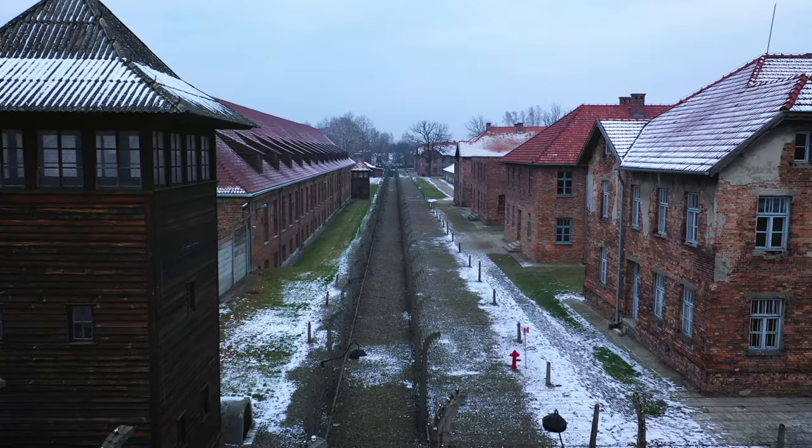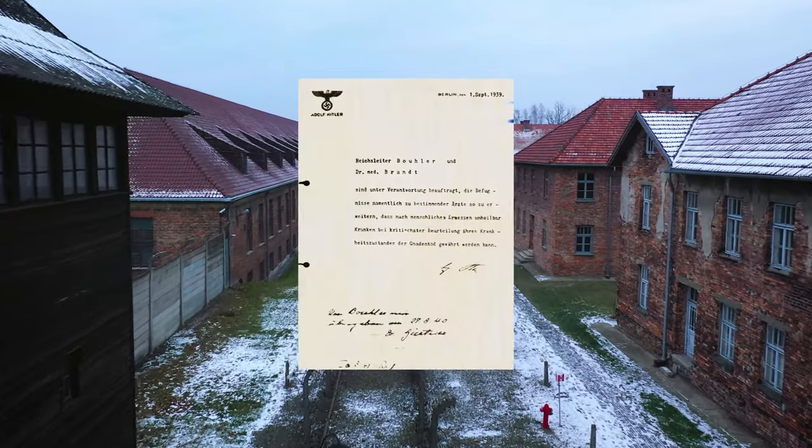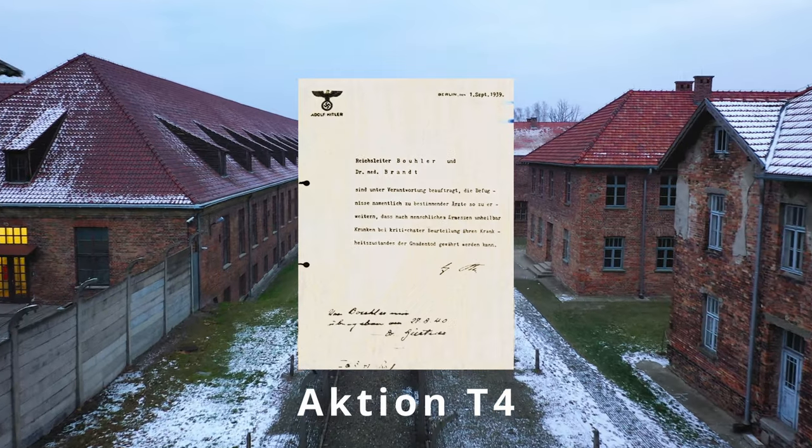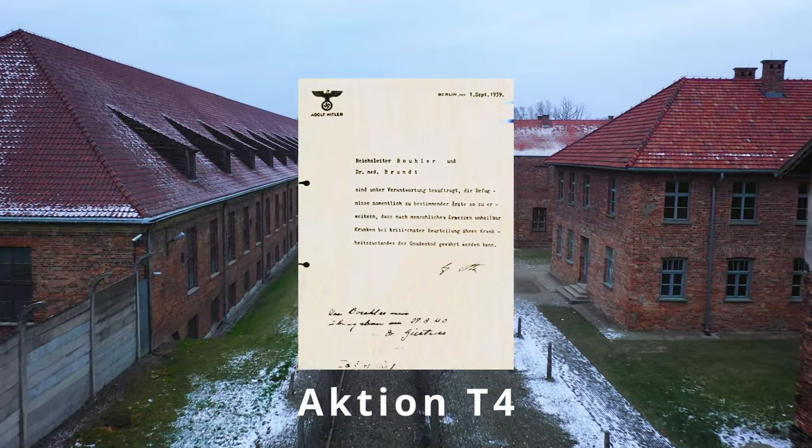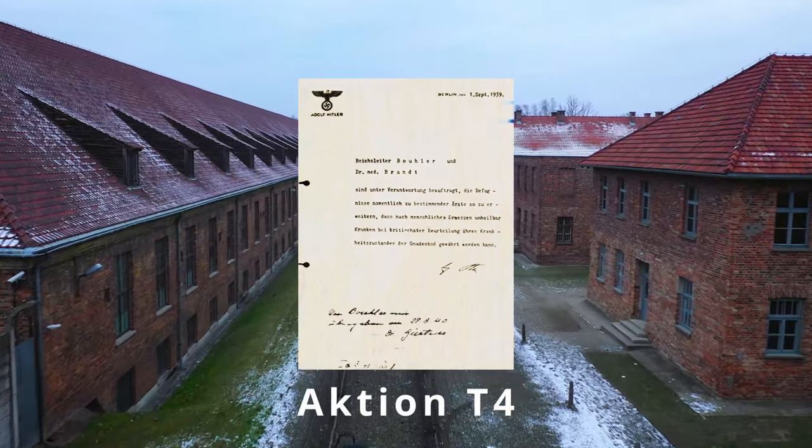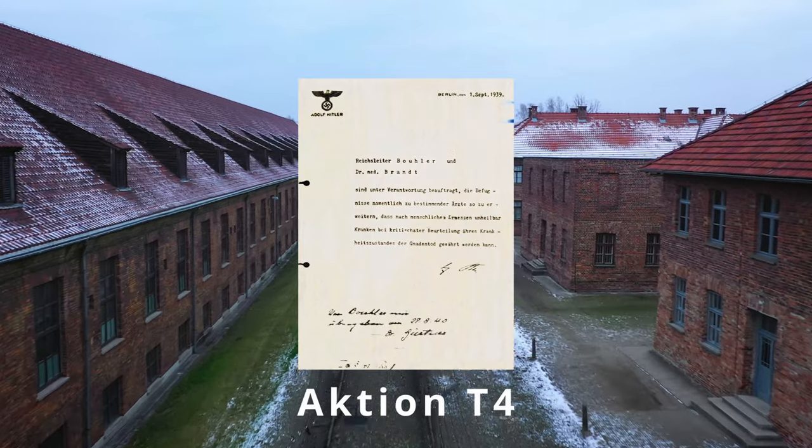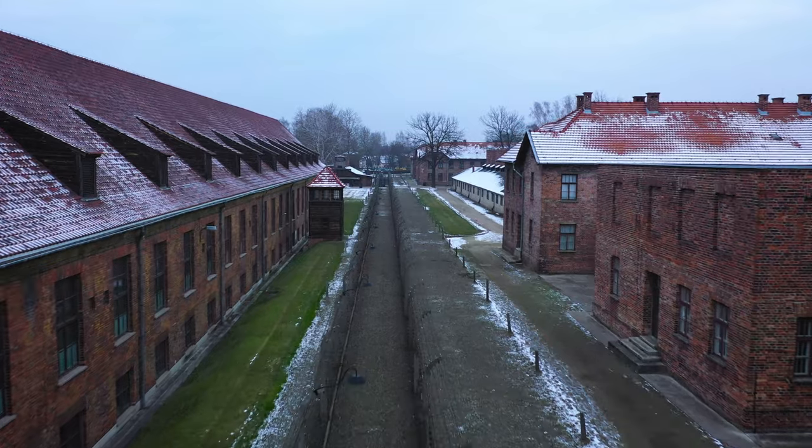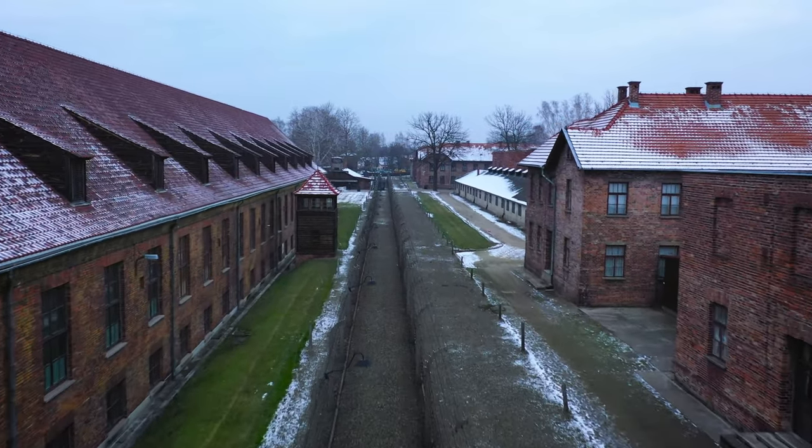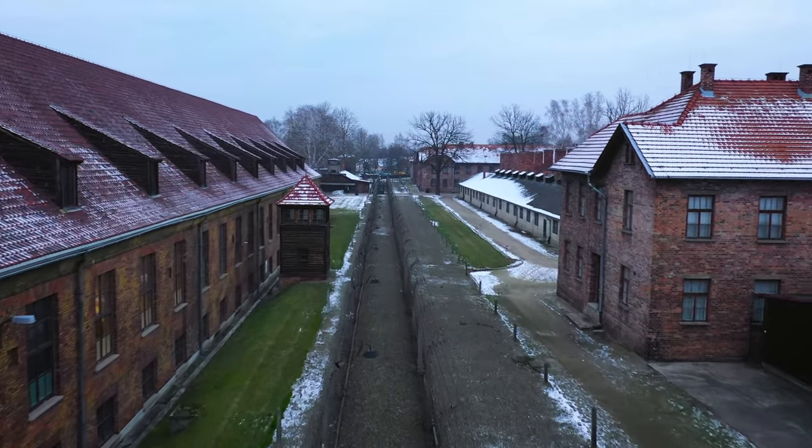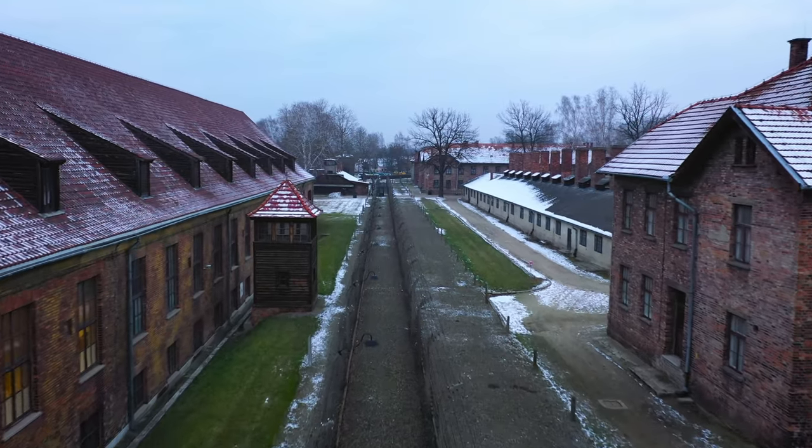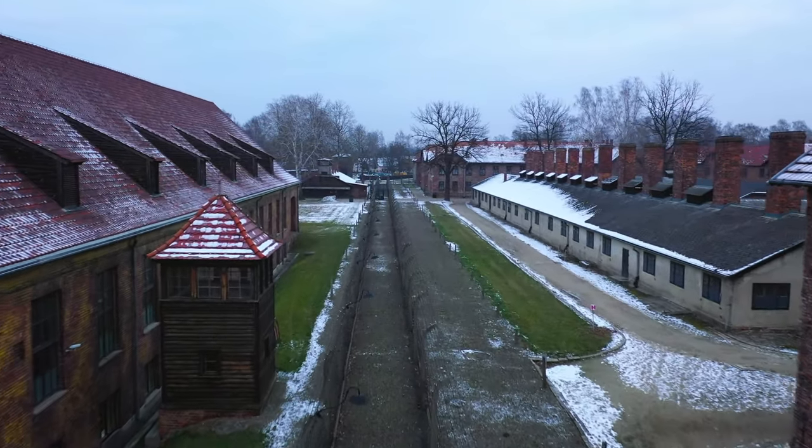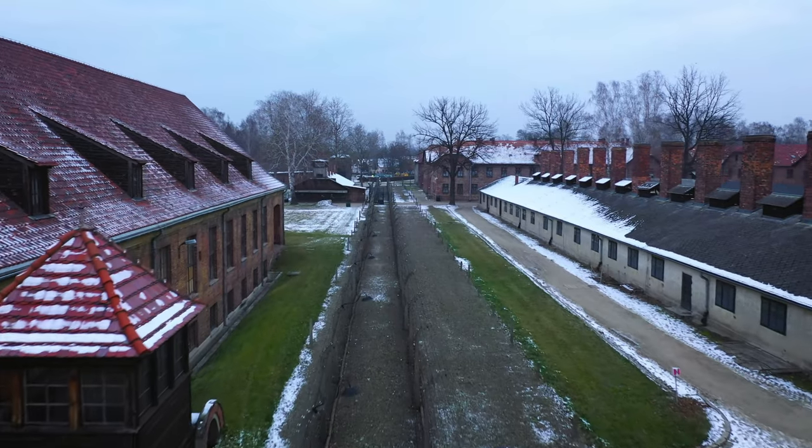The involuntary euthanasia program, known as Aktion T4, was established to kill people with disabilities, mental illnesses, and other conditions considered life unworthy of life. More than 200,000 people were killed under this program, including children as young as six months old. The killings were carried out in gas chambers, and the victims' bodies were often used for medical research.